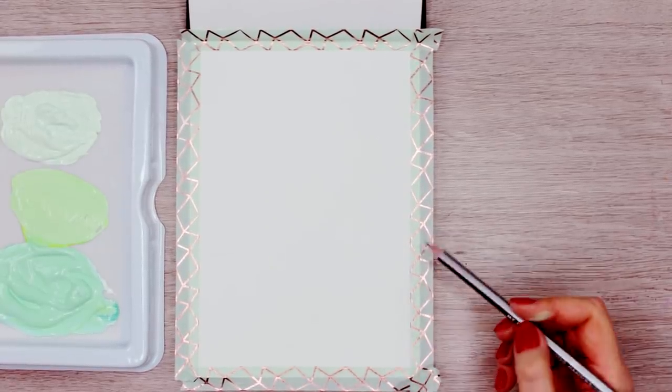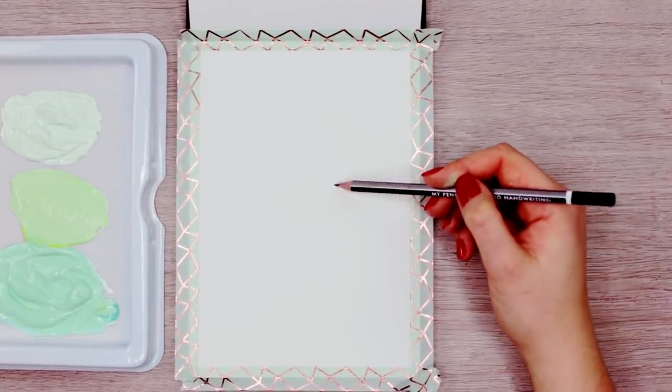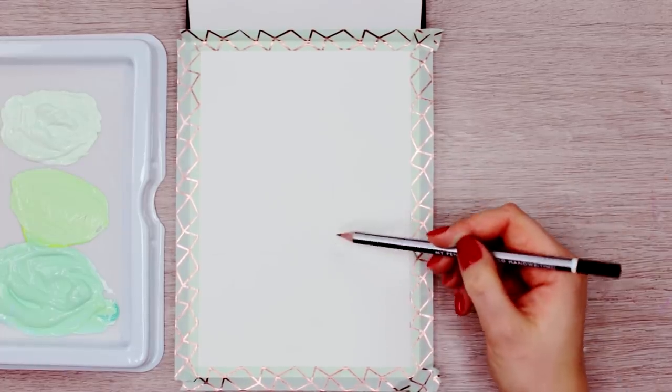If you want to, you can sketch out a few lines for yourself so you know how you want the movement of the northern light to be and then we can go ahead and start painting.